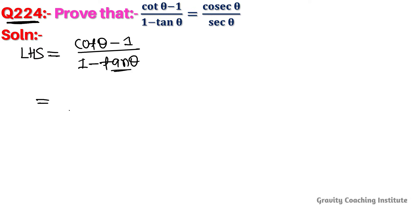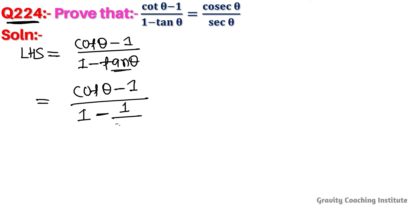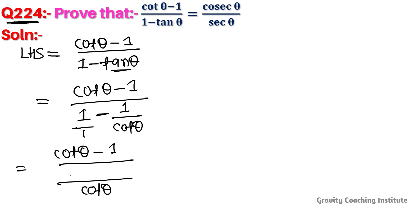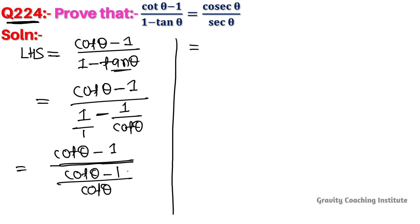If we change this, then cot theta minus 1 by 1 minus cot theta. Taking LCM, this will be cot theta minus 1 and cot theta minus 1, so equal to it is the numerator upon the denominator — taking the reciprocal.